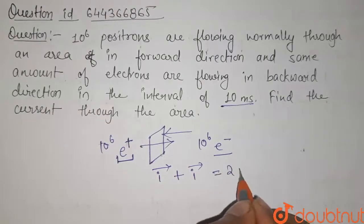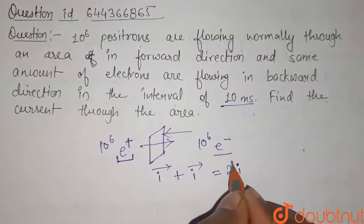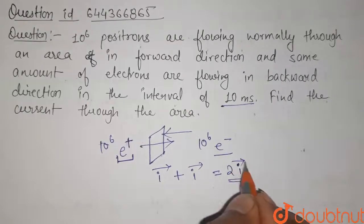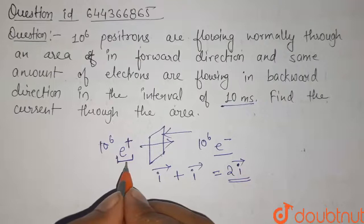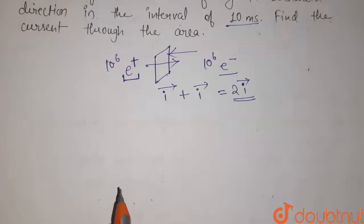So here, the total current will be given by 2 times i, where i is the current through any of the positrons or electrons.